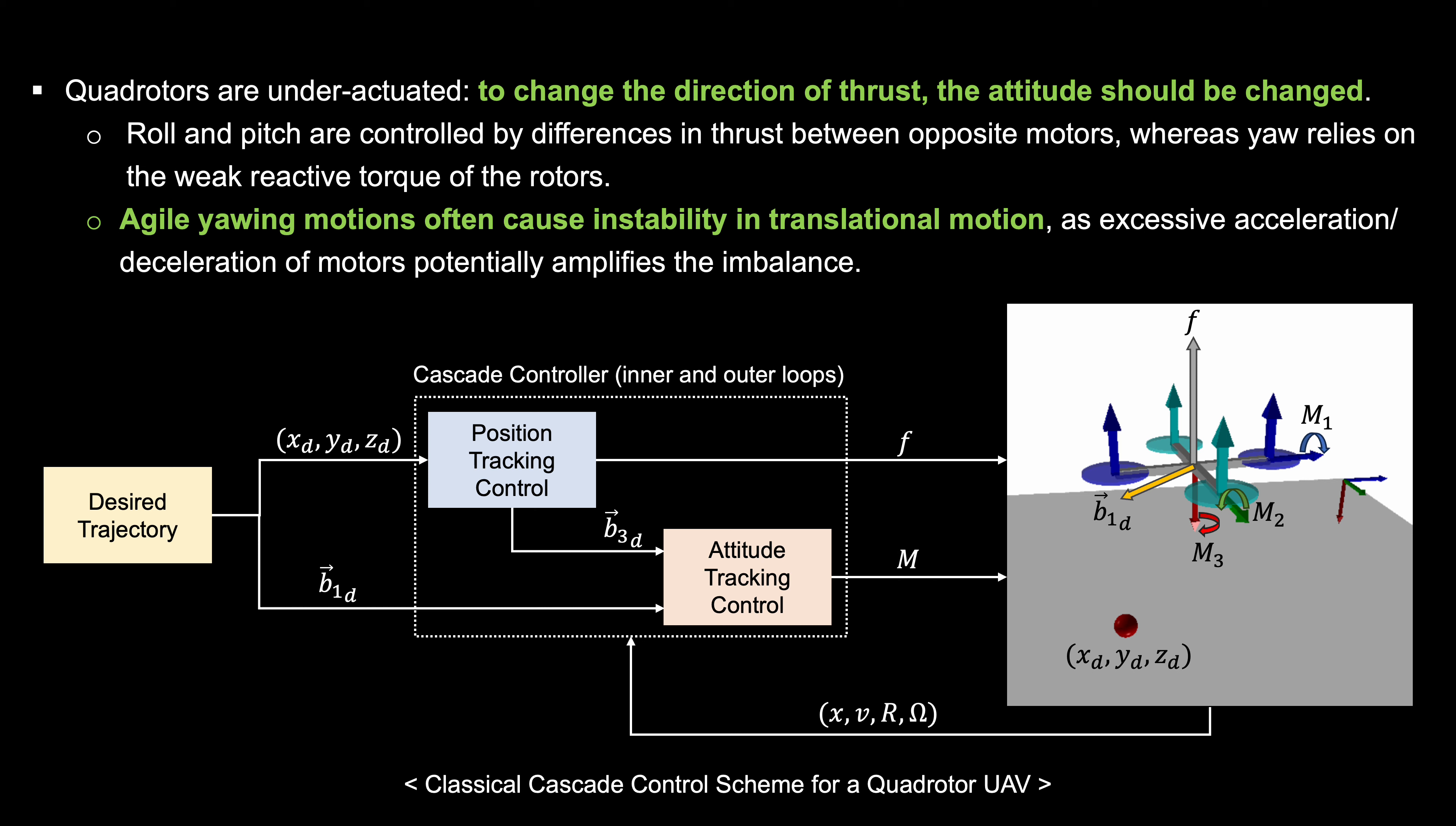Whereas yaw is controlled by the weak reactive torque of the rotors. As such, aggressive yawing motions can often destabilize the quadrotors' movement due to excessive acceleration or deceleration of the motors.